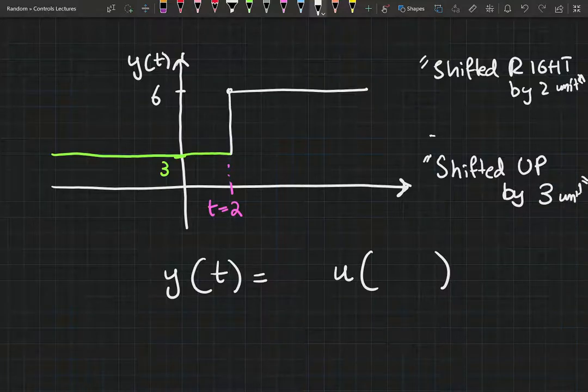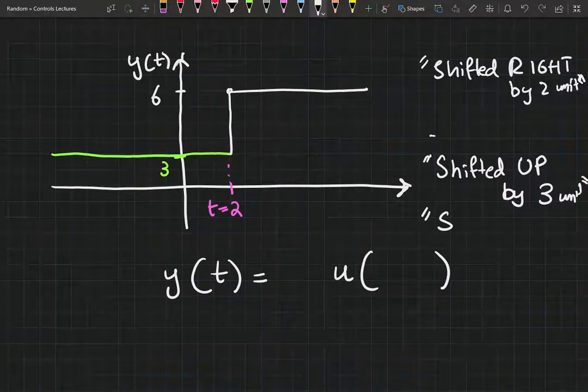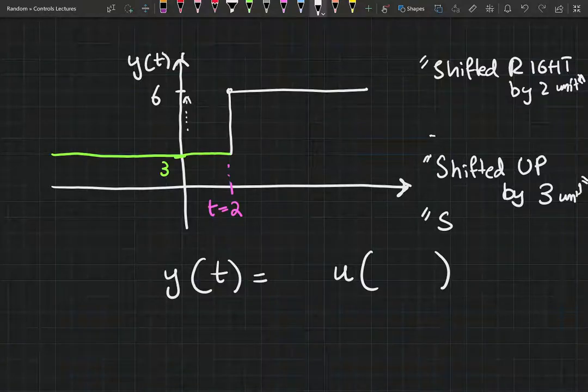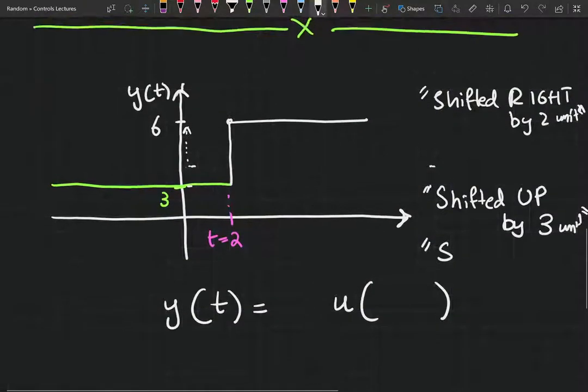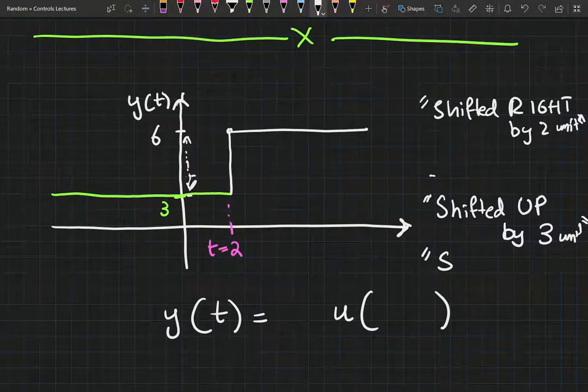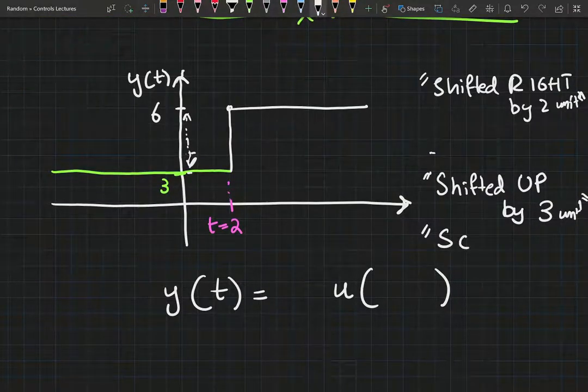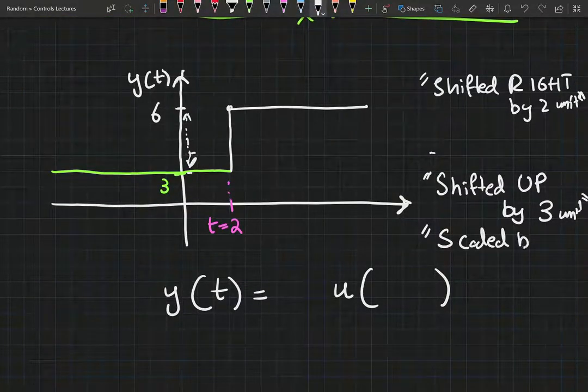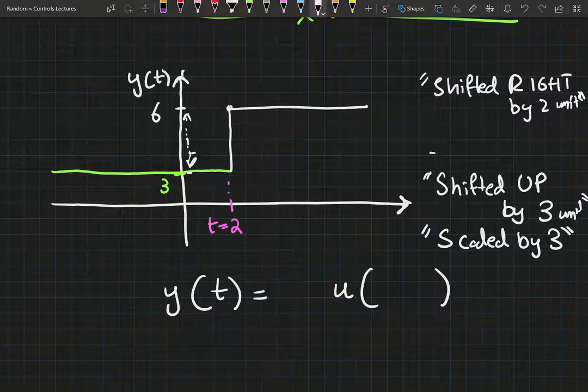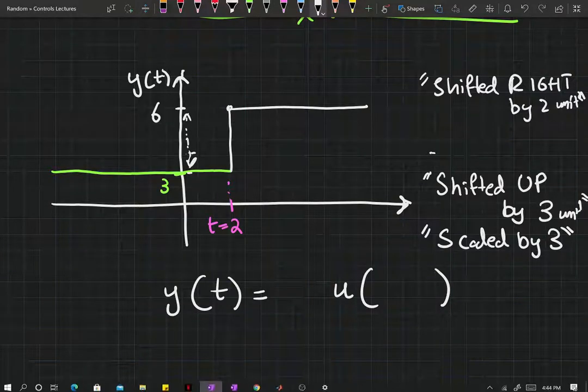And it is also scaled. The increase is not equal to one unit. The increase is equal to three units. Six minus three is three. Scaled by a factor of three. So these are all the transformations our function has gone over.